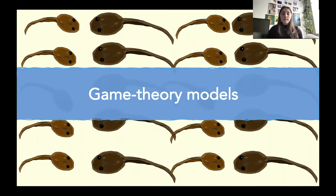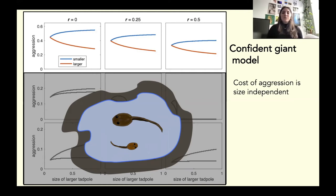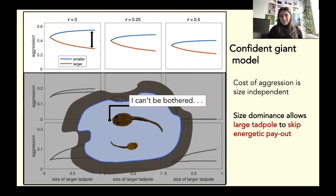So again here we're using several pretty accepted biological hypotheses to shape our mathematical structure of the model assumptions, and I'd like to take you through those models now. So first we have the confident giant model. So here again the cost of aggression is size independent, and essentially large tadpoles are less aggressive because being large means you'll probably win, so you really can't be bothered to fight. In other words, size dominance allows the large tadpole to skip the energetic payout of fighting. This is again actually why we're seeing the small tadpole having huge amounts of aggressive behavior, because since the cost of aggression is size independent, that small tadpole is just going to fight with all of its might to survive, versus the large tadpole that just can't be bothered.